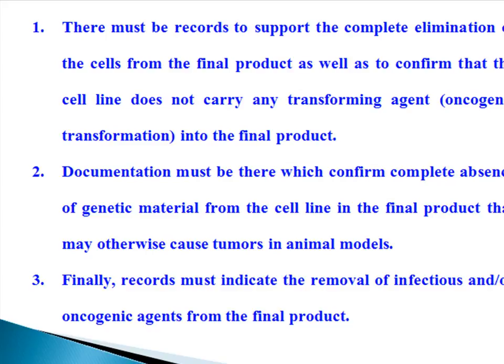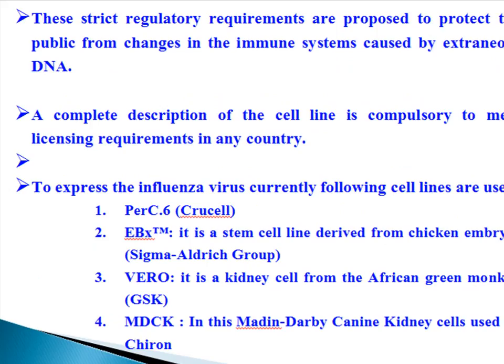Documentation must confirm complete absence of genetic material from the cell line in the final product that may otherwise cause tumors in animal models. Finally, records must indicate the removal of infectious and/or oncogenic agents from the final product. The strict regulatory requirements are proposed to protect the public from changes in the immune system caused by extraneous DNA. A complete description of the cell line is compulsory to meet licensing requirements in any country.